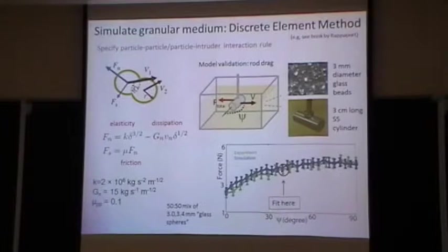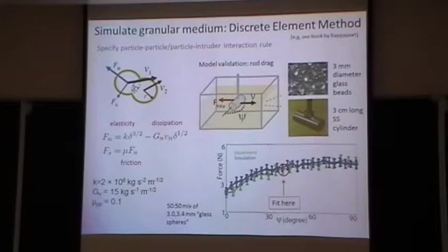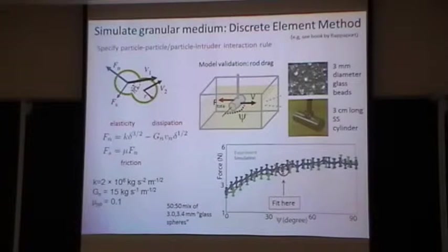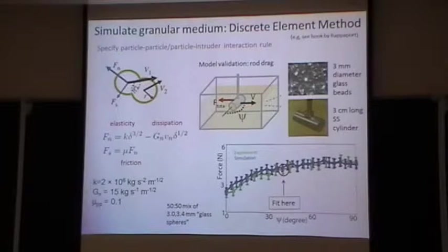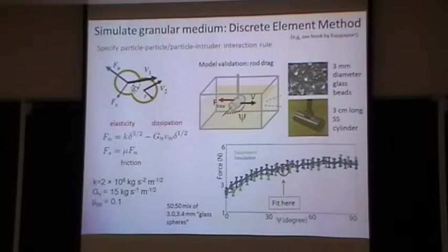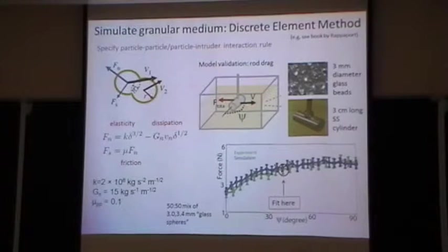It's about a factor of two difference in force across the range, and we get a good match over this orientation range. Keep that in mind because it'll come back at the end — the reason we do this is to extract just a force parameter for resistive force type arguments, but that's the end of the talk.